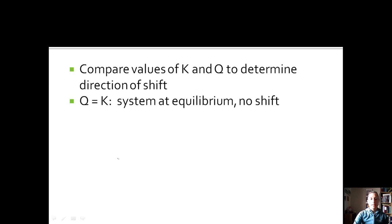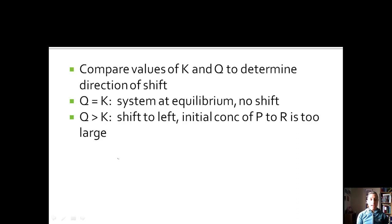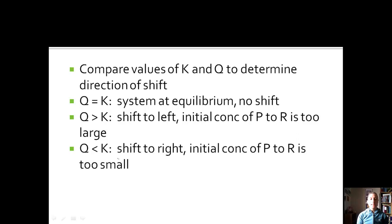If Q equals K, the system is at equilibrium and no shift will occur. If Q is much larger than K, the system will shift to the left because the initial concentration of products to reactants is too large. If Q is much smaller than K, the system will shift to the right because the initial concentration of products to reactants is too small, and we need to produce more products.